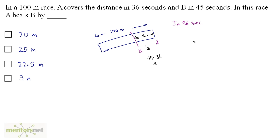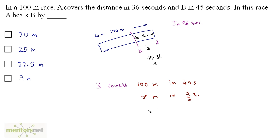Let us calculate x. B covers 100 meters in 45 seconds. So how much distance will it cover in 45 minus 36, that's 9 seconds? Cross multiply and equate: x equals 9 times 100 divided by 45. That gives x equal to 20 meters. So option A is the correct answer.